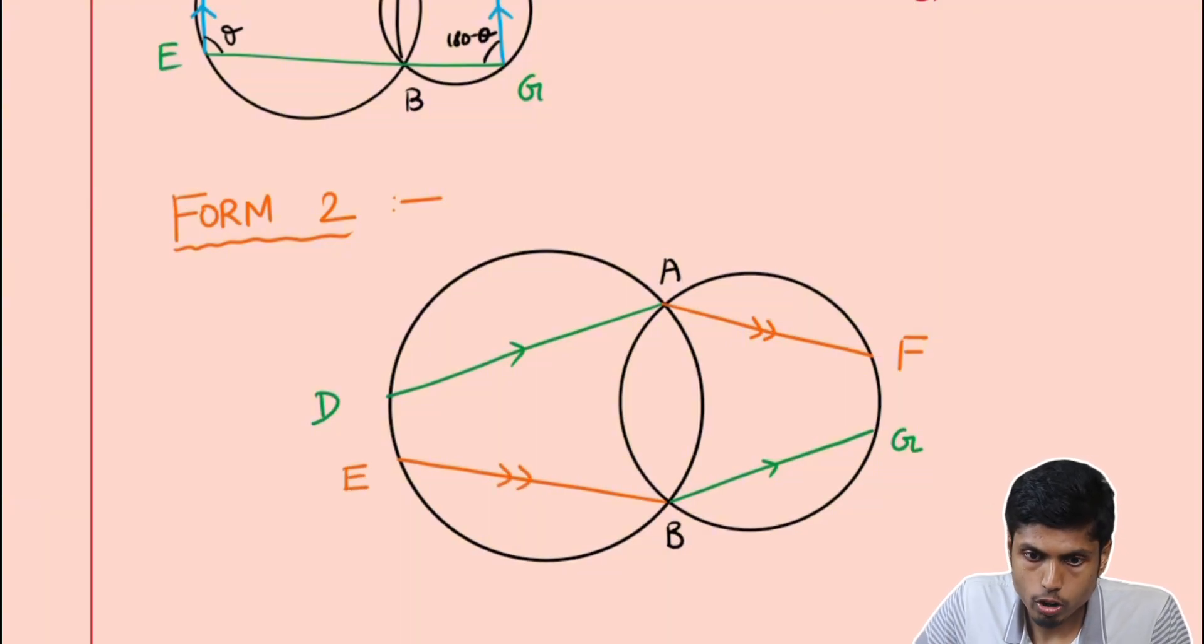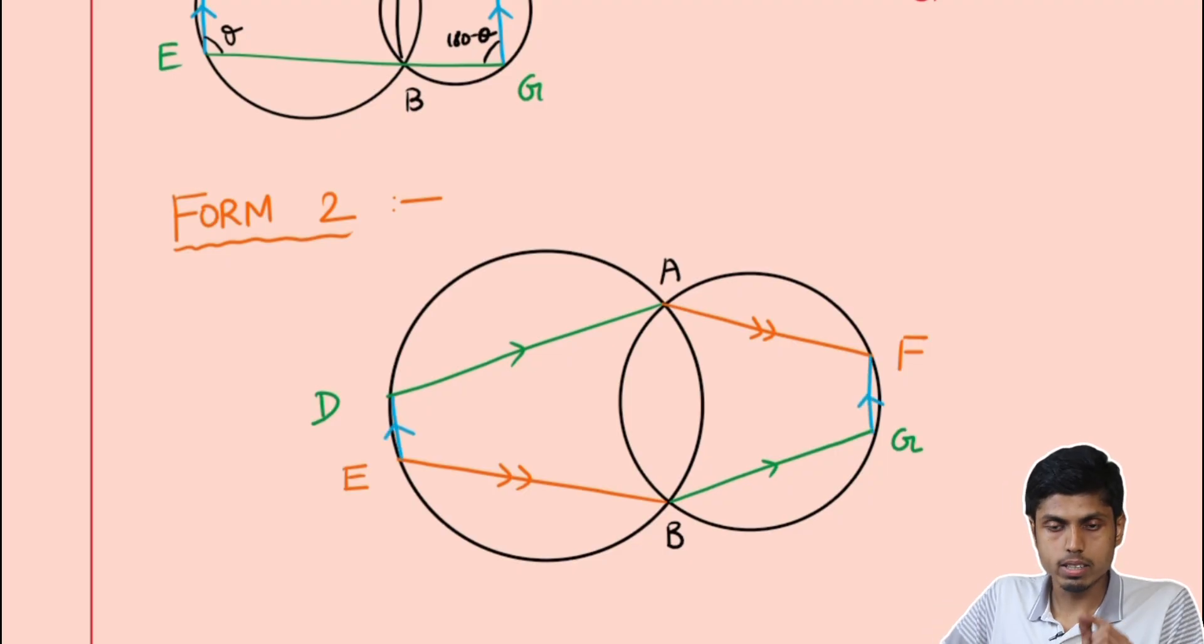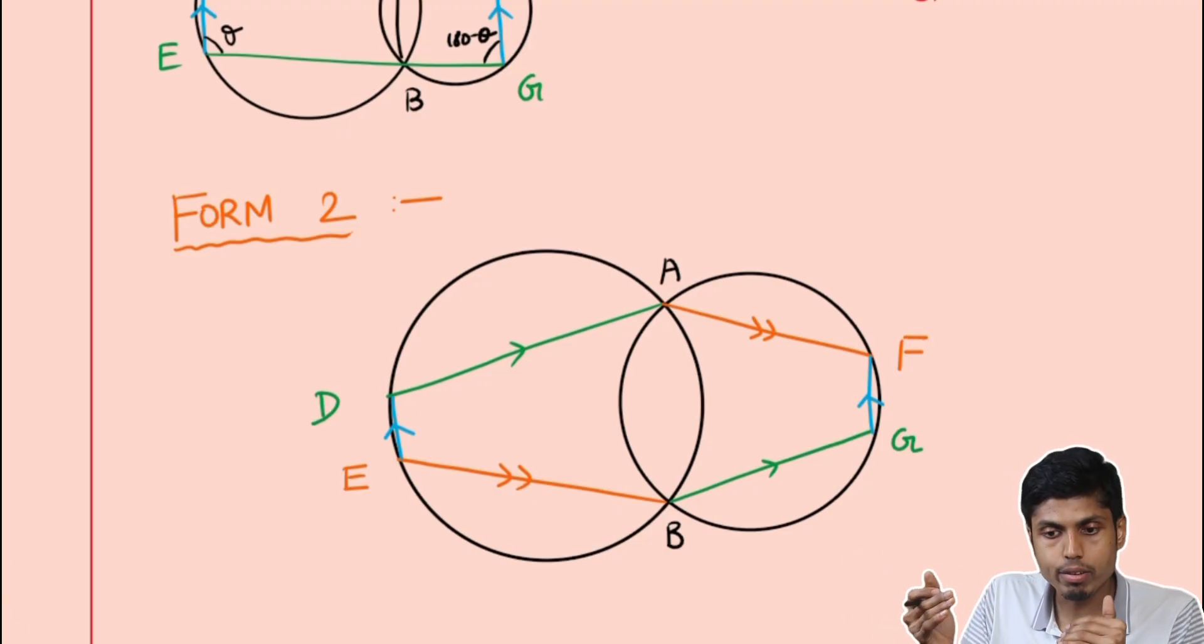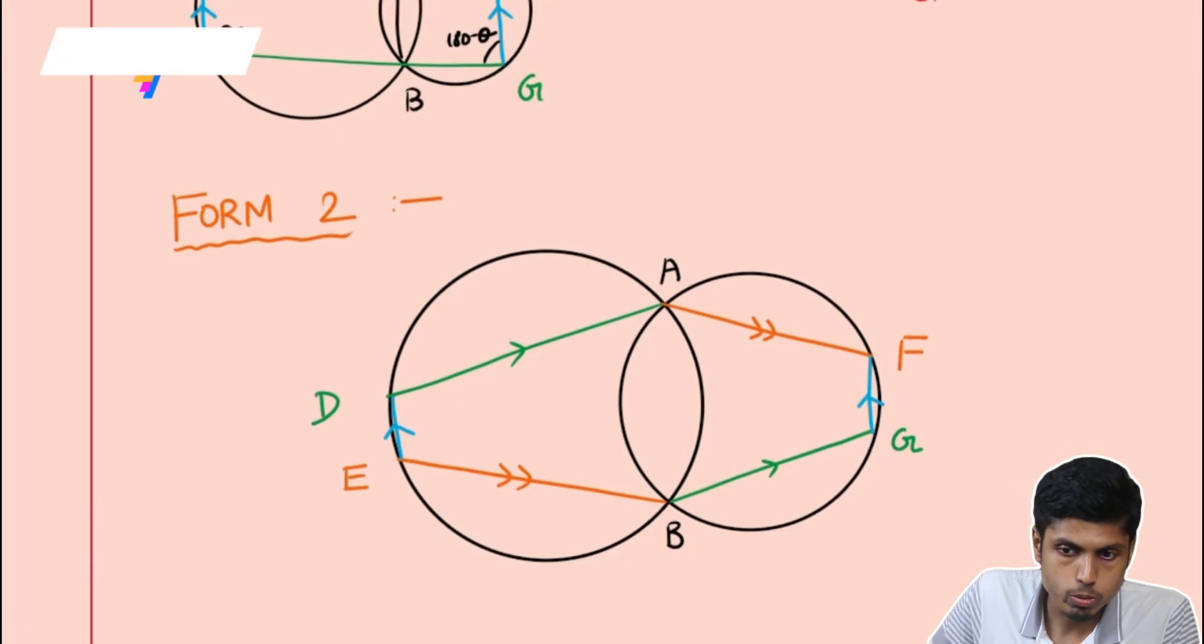And in this form of Riem's theorem, it turns out that DE is parallel to FG again. Earlier points DAF were collinear and EBG were collinear. And now the alternating lines AD and BG are parallel and AF and BE are parallel.